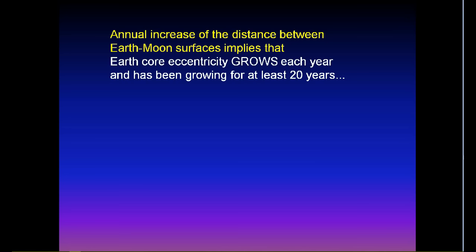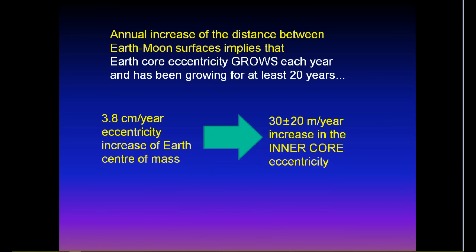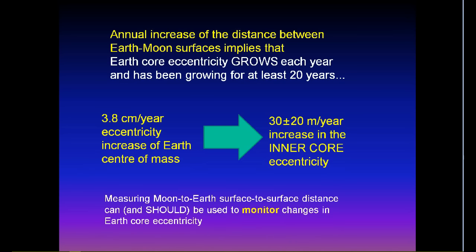Annual increase of the distance between Earth and Moon surfaces implies that the Earth core eccentricity grows each year and has been growing for at least 20 years. 3.8 cm per year eccentricity increase in Earth's center of mass means that the inner core eccentricity increases about 30 meters each year. Measuring Moon to Earth, surface to surface distance, can and should be used to monitor changes in Earth core eccentricity.